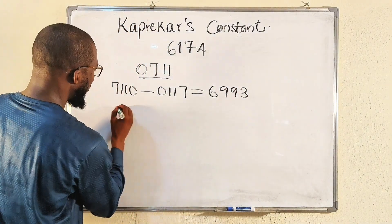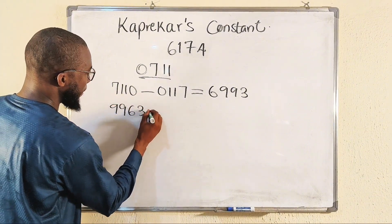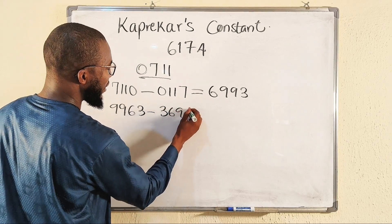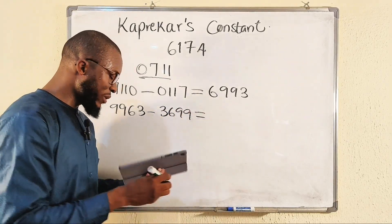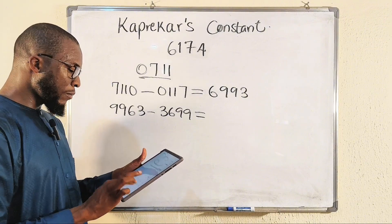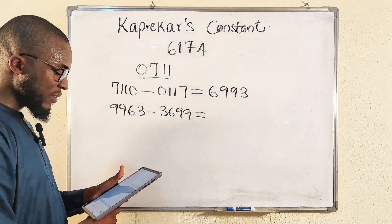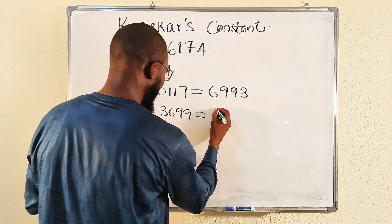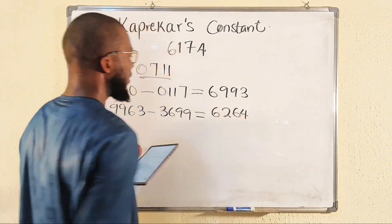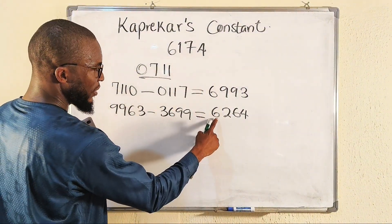We're going to repeat the same process. The biggest number will be 9963, minus the smallest one, which is 3699. The difference is 9963 minus 3699, which gives us six thousand two hundred and sixty-four. This is the second iteration. The number is not the same yet.